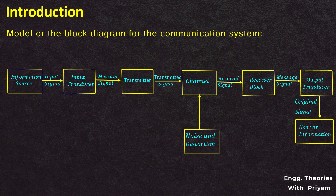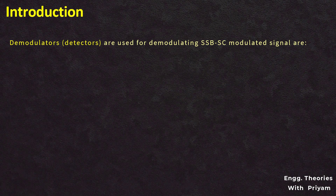The process of extracting the original message signal from the SSBSC modulated signal is known as detection or demodulation of the SSBSC modulated signal. A coherent or synchronous detector is mainly used for this demodulation. This technique of retrieving the original message signal is called SSBSC detection or demodulation, achieved through the use of a coherent detector, also known as a synchronous detector.